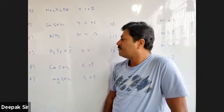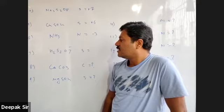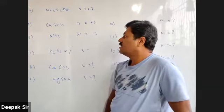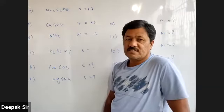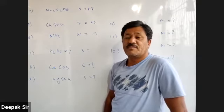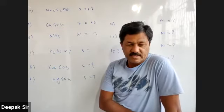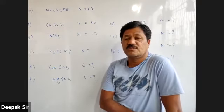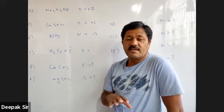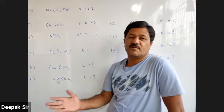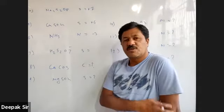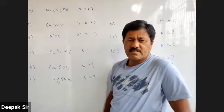The student says: by calculation I am getting the oxidation number of sulfur to be 11 by 2. The teacher responds: okay, it's in fraction — no problem. The oxidation number can be in fraction.